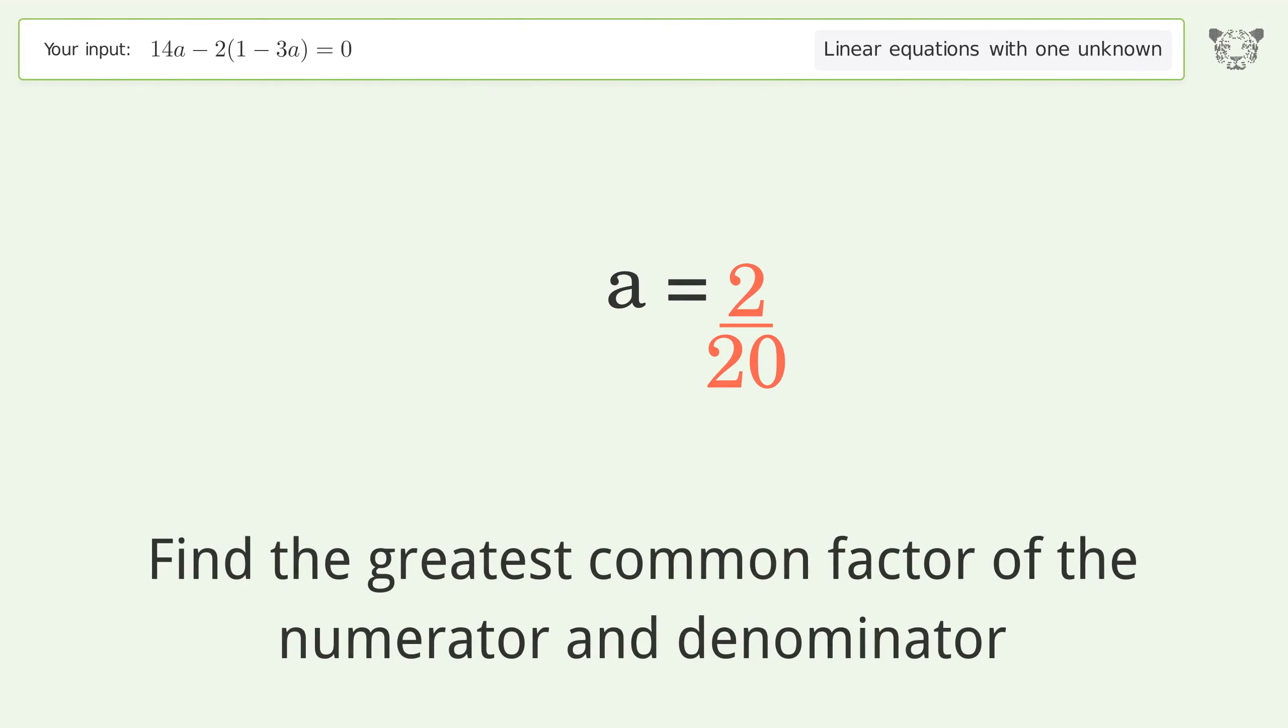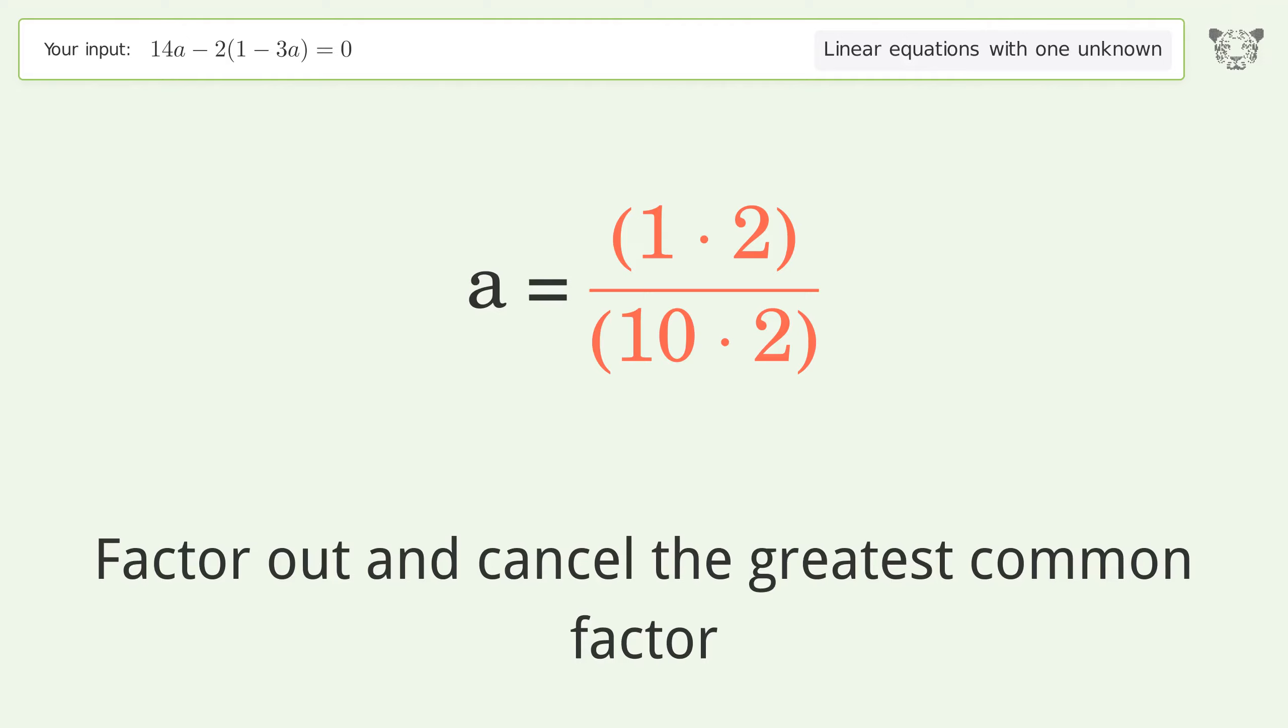Find the greatest common factor of the numerator and denominator, then factor out and cancel the greatest common factor.